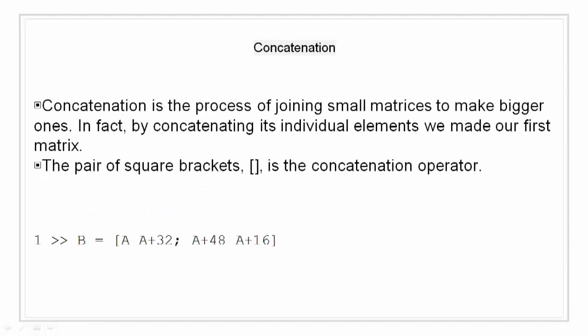Concatenation: Concatenation is the process of joining small matrices to make bigger ones. In fact, by concatenating individual elements, we created the first matrix. The pair of square brackets is a concatenation operator. For example, we will create a matrix B with already existing matrix A: [A A+32; A+48 A+16]. This will create an 8 by 8 matrix obtained by joining the 4 sub-matrices. As this topic has already been covered in previous videos, I am not going to go in depth.